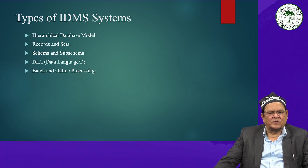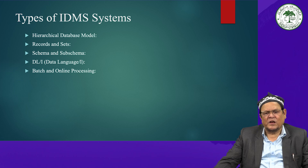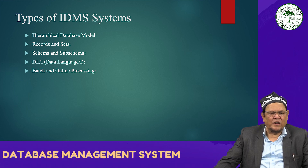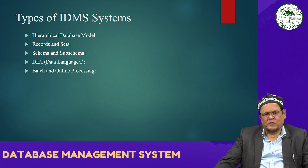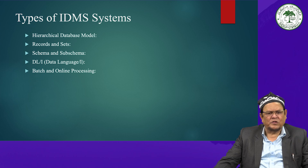IDMS uses a query language called DL1 for interacting with the database. DL1 statements are used to navigate through the hierarchical structure and perform operations such as retrieval and update of records. IDMS supports both batch and online processing: batch processing involves execution of programs that interact with the database without user interaction, while online processing allows users to interact with the system in real time.